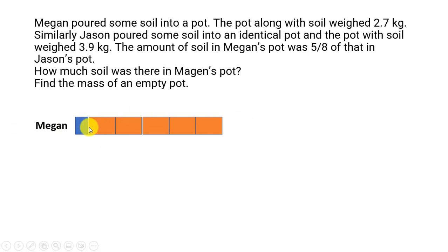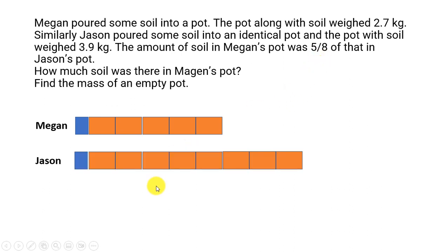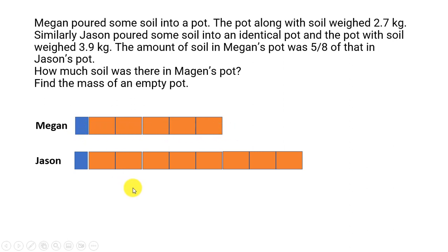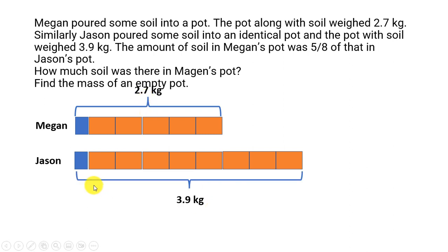Now, Megan has five units plus the container, and Jason would have eight units. And in both cases, the pot is there. We don't know the mass of the pot yet. But what we know is this whole amount with Megan is equal to 2.7 kilograms, and for Jason the whole thing weighs 3.9 kilograms.